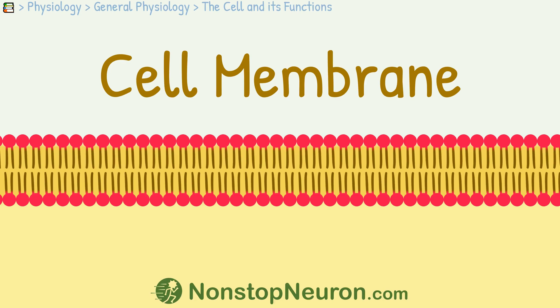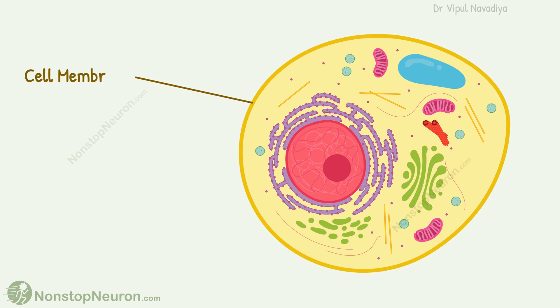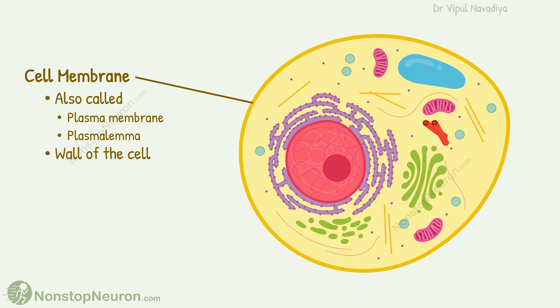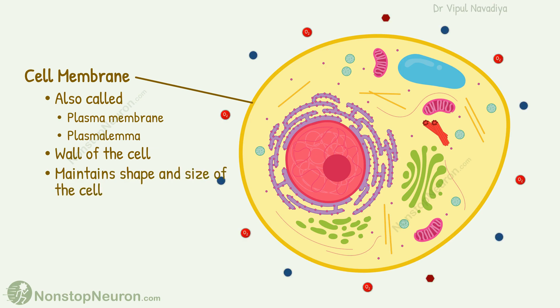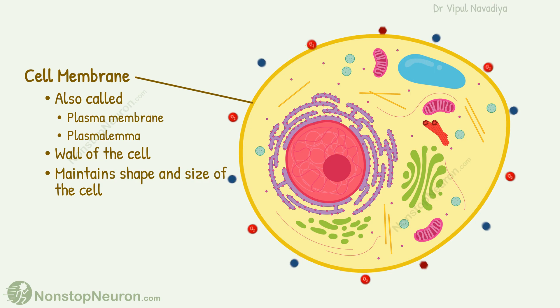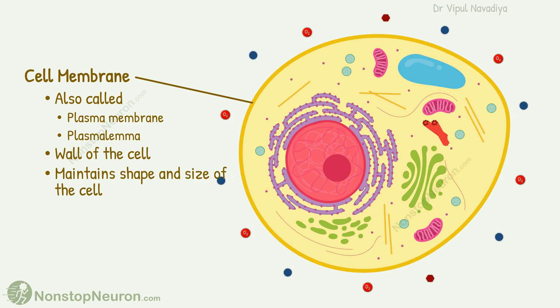In this video, we will talk about cell membrane. The cell membrane is also called the plasma membrane, or plasmalemma. It makes the outer protective wall of the cell. It maintains the shape and size of the cell. And any exchange between the inside and outside of the cell happens through the cell membrane only.